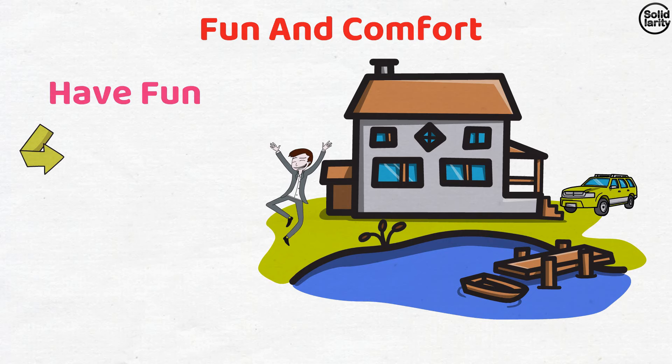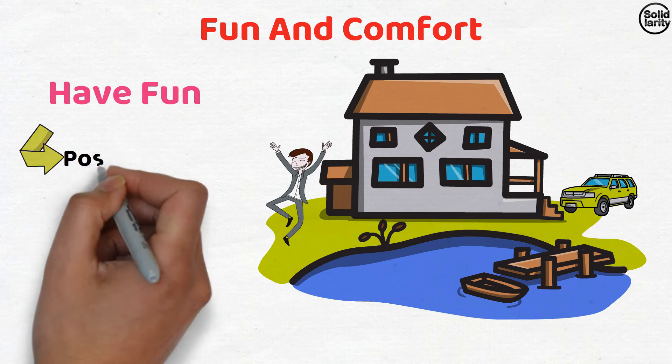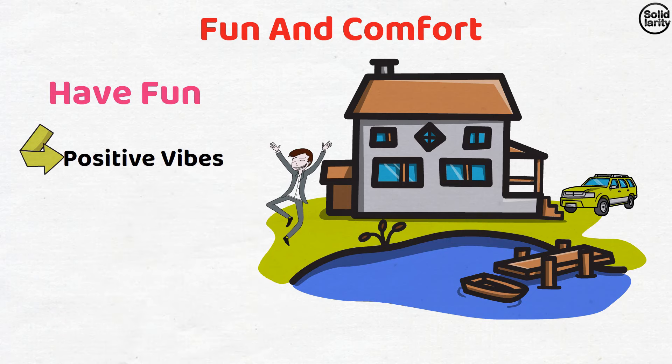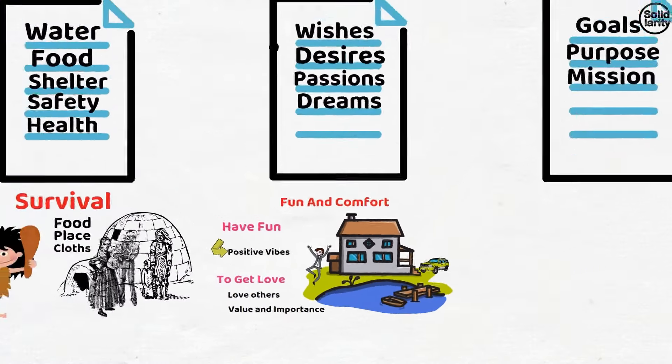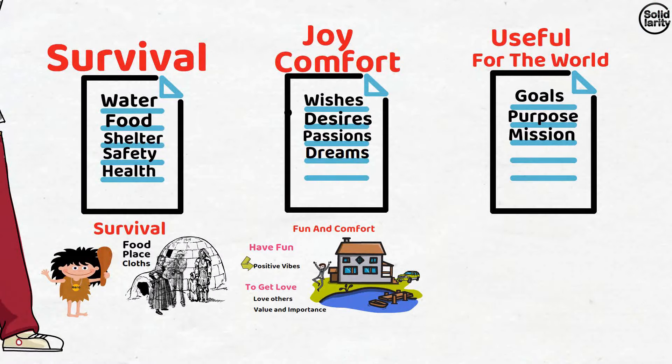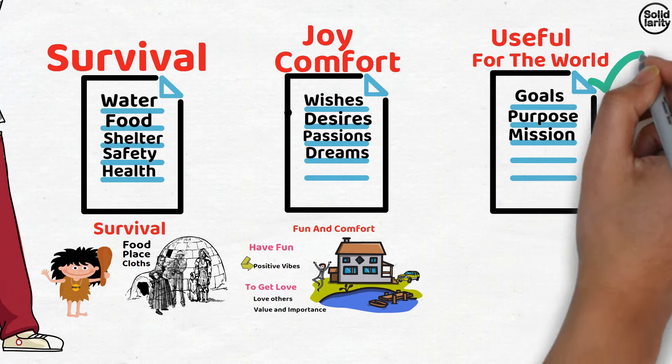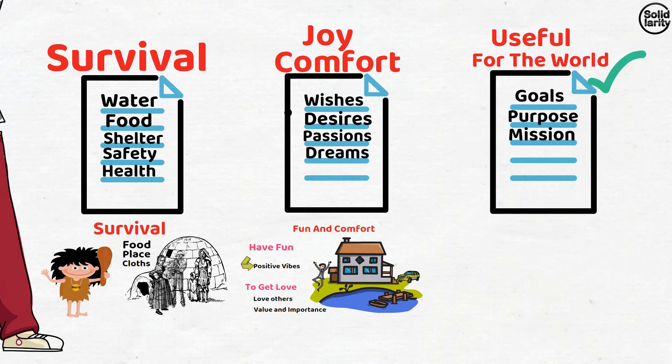Secondly, we can perhaps tell him that if you want to get love, you should love others, and if you want to get importance, you should give value and importance to other people. Third, we can probably tell him to start thinking of list number three, because we humans appreciate others when they become useful for others.